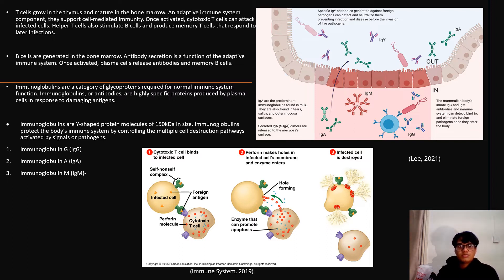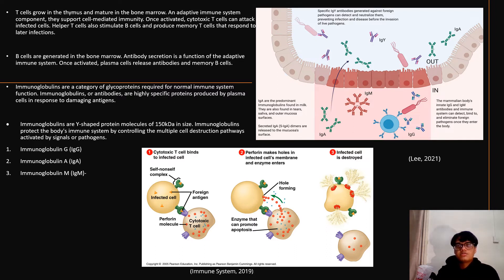The bone marrow produces and matures B cells. They are a component of the adaptive immune system that contribute to humoral immunity through antibody secretion. B cells develop into plasma cells that release antibodies and memory B cells once they are activated. Immunoglobulins are subclass glycoproteins that are critical for the proper functioning of the immune system, also known as antibodies, and are highly specific proteins released in large quantities by plasma cells to respond to harmful antigens.